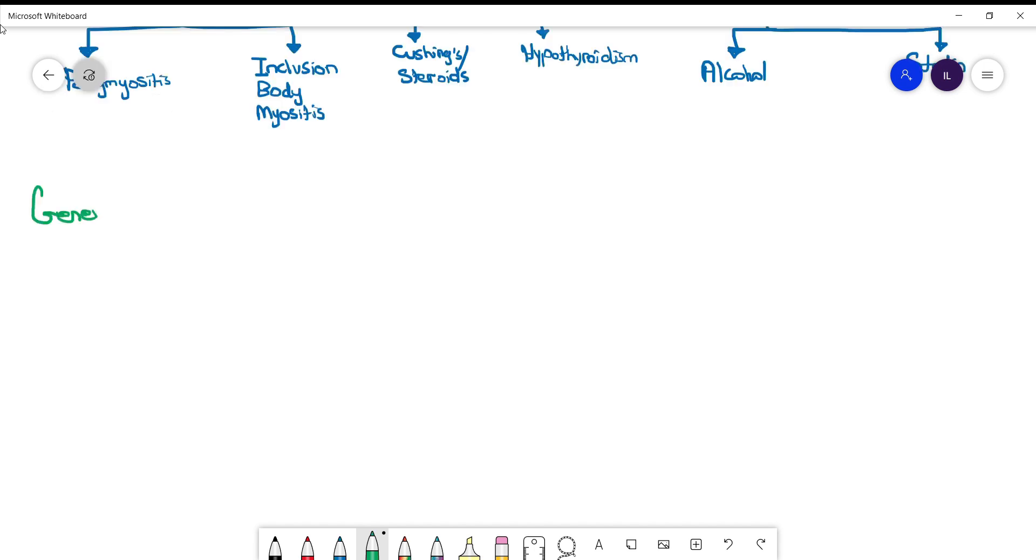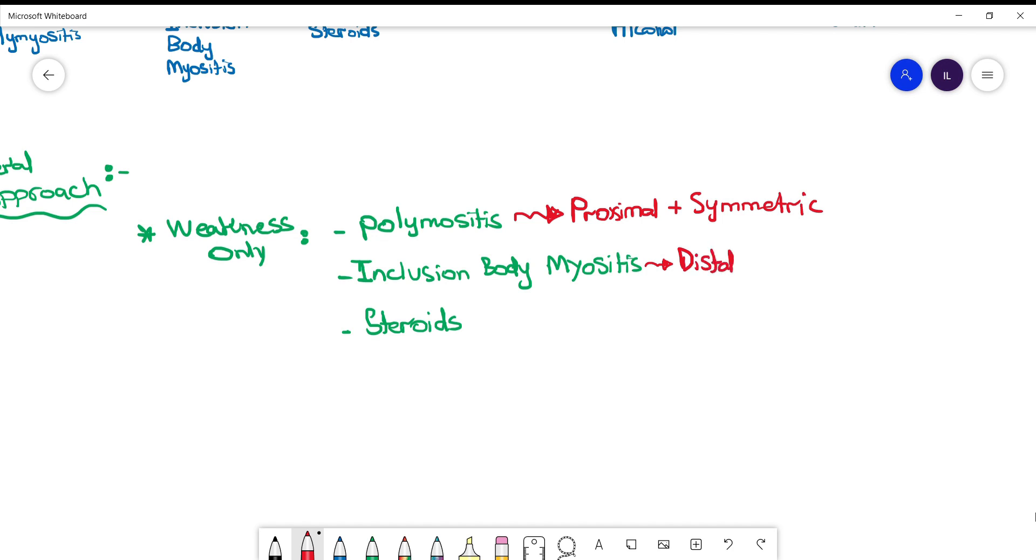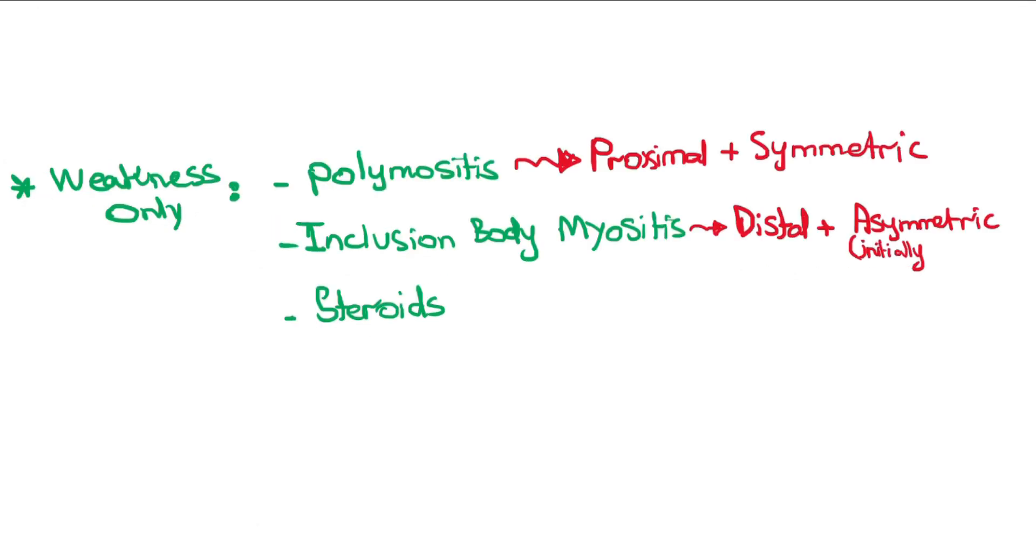General approach: when the patient presents with weakness only, the differential is polymyositis, inclusion body myositis, and steroid-induced. We can differentiate based on the site involved. Polymyositis is more proximal, inclusion body myositis mainly affects distal muscles and can initially present as asymmetric then becomes symmetric.